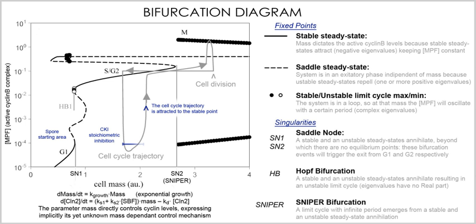By means of a system of ordinary differential equations, these models show the change in time of the protein inside a single typical cell — this type of model is called a deterministic process, whereas a model describing a statistical distribution of protein concentrations in a population of cells is called a stochastic process. To obtain these equations, an iterative series of steps must be done: models and observations are combined to form a consensus diagram, and the appropriate kinetic laws are chosen to write the differential equations, such as rate kinetics for stoichiometric reactions, Michaelis-Menten kinetics for enzyme-substrate reactions, and Goldbeter-Koshland kinetics for ultrasensitive transcription factors. Afterwards, the parameters — rate constants, enzyme efficiency coefficients and Michaelis constants — must be fitted to match observations; when they cannot be fitted, the kinetic equation is revised, and when that is not possible, the wiring diagram is modified.